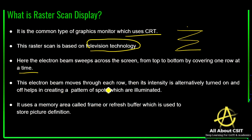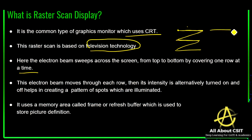The electron beam moves through each row. Its intensity is alternatively turned on and off, which helps in creating a pattern of spots. So this pixel is on, then off, then on again, and it comes back off — like that from top to bottom, covering one row at a time.